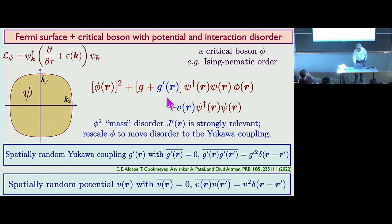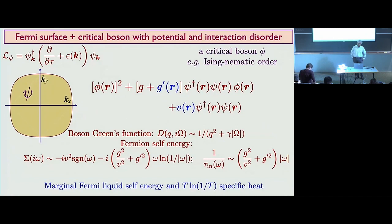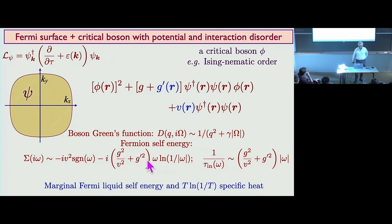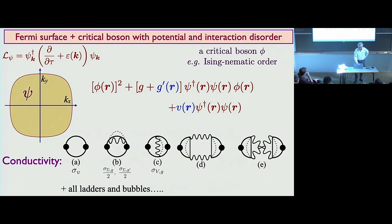Now you've turned the same crank on this simple theory. What do you get? You get everything you want, really. First, just as with random V, you get marginal Fermi liquid behavior in the electron self-energy. There are two contributions to the marginal Fermi liquid self-energy: there's the G-squared and V-squared term we had before, and there's also a G-prime-squared term. All the coefficients are set to one for purposes of this talk.